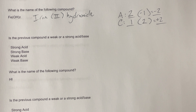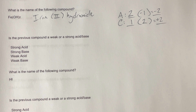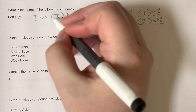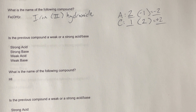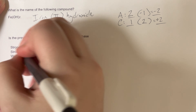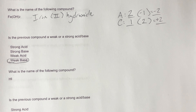Is the previous compound a weak or strong acid or base? All of my strong bases are alkali metals bonded with hydroxide or heavy alkaline earth metals bonded with hydroxide. Iron is not in the first two columns, as shown by it needing an oxidative state, so therefore it is going to be a weak base since it is still bonded with hydroxide.